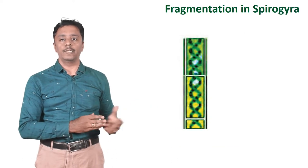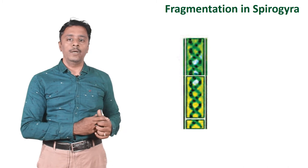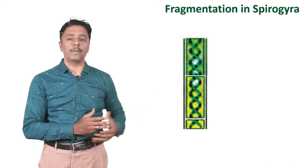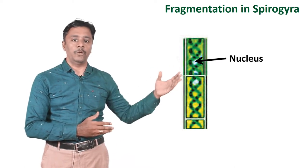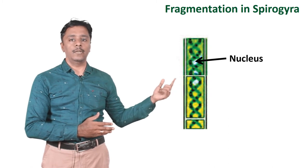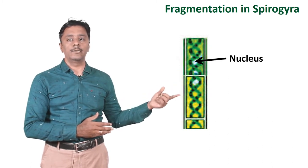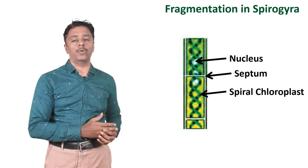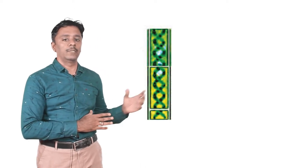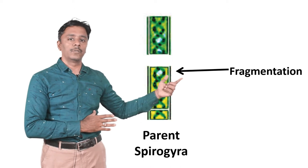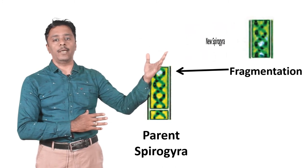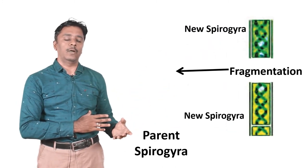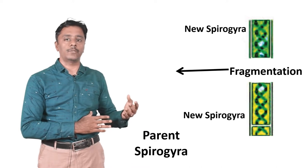This is a picture of Spirogyra giving rise to new plants by means of fragmentation. We are going to see how the process goes on. A Spirogyra is present here, with the nucleus, septum, and spiral chloroplast visible. In fragmentation, the parent Spirogyra is fragmented — one part goes on to form a new Spirogyra and the other part separately forms another new Spirogyra. This process is called fragmentation.